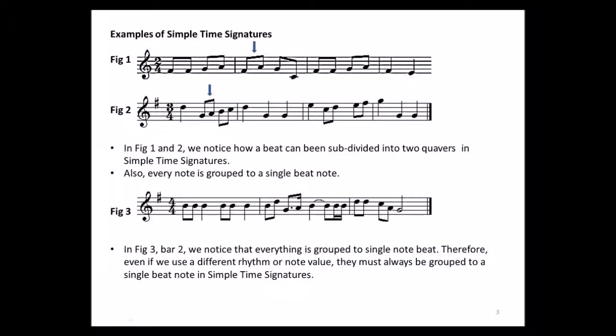In figure one and figure two, we notice how a beat can be subdivided into two quavers in simple time signatures. In bar one of figure one, there are two beats which have been subdivided into two quavers in each group. The same applies in the next bars, and in one bar we have only crotchets.